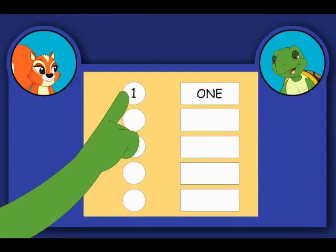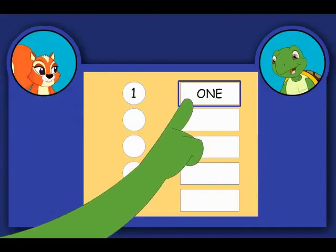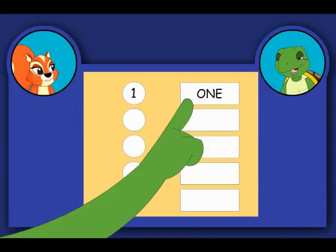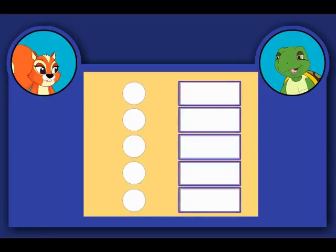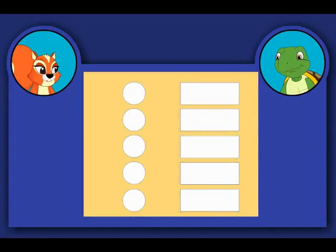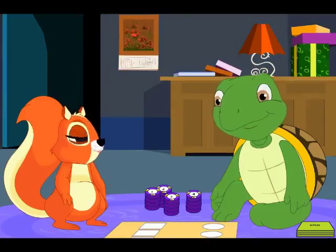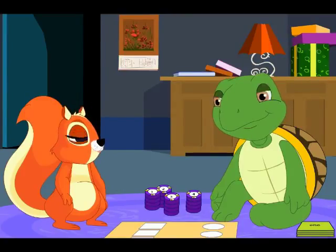The coins have the numbers written in figures and the cards have the numbers in words. Now I shall place the coins in the given circles on the chart one by one, and you have to place the card with the number in words beside the coin. Or I will place a card in the rectangle and you will place the same number coin beside it.